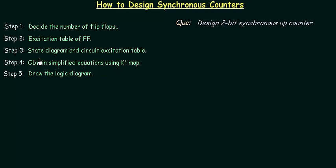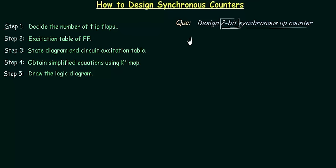We will solve one problem and implement all these five steps. The problem is: design a 2-bit synchronous up counter. Step number one says decide the number of flip flops and the type of flip flop to use. You already know from asynchronous counters that the number of flip flops is decided on the basis of the bit of the counter. In this case we have a 2-bit counter, so we will use 2 flip flops. I will use a JK flip flop for the designing purpose.